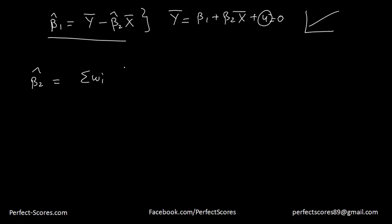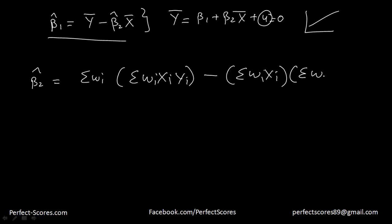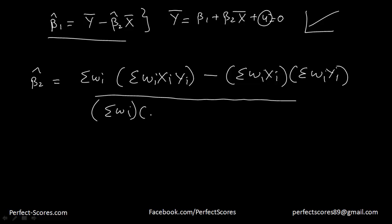Beta2-hat equals the summation of wi times the summation of wi·xi·yi minus the summation of wi·xi — a similar equation to ordinary least squares, but with the introduction of wi in every term. This weight wi eliminates the problem of heteroscedasticity, because dividing by the appropriate number makes the variance of the error terms constant and no longer varying with any variable.